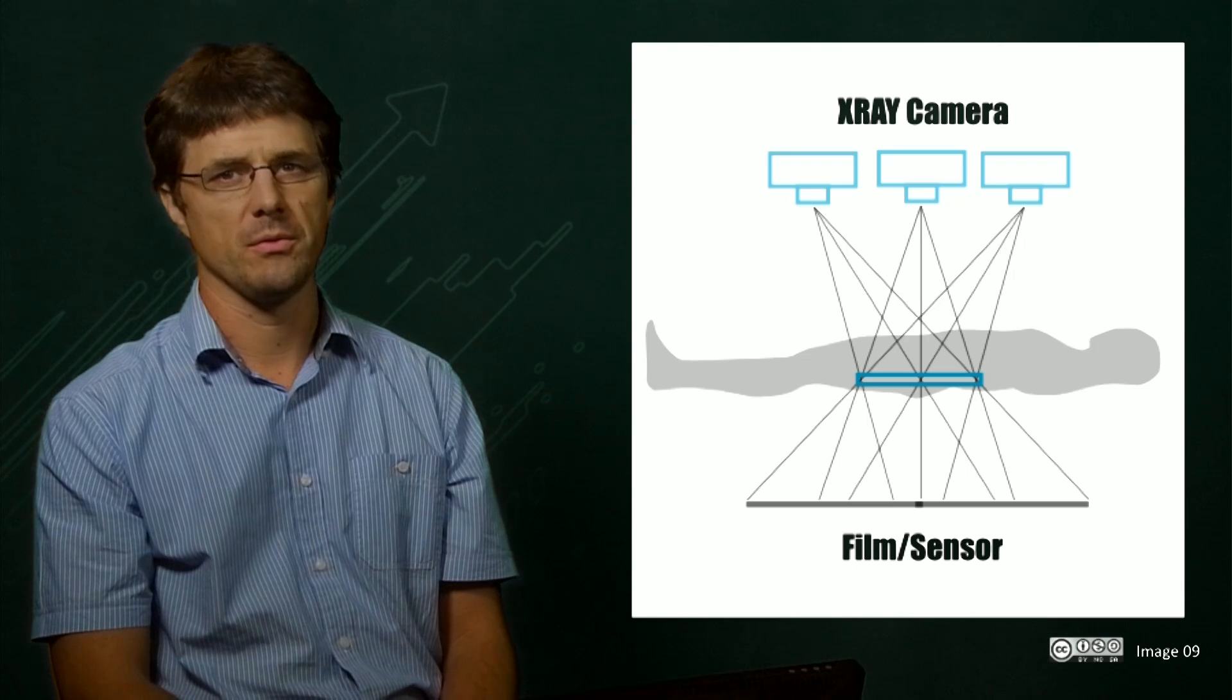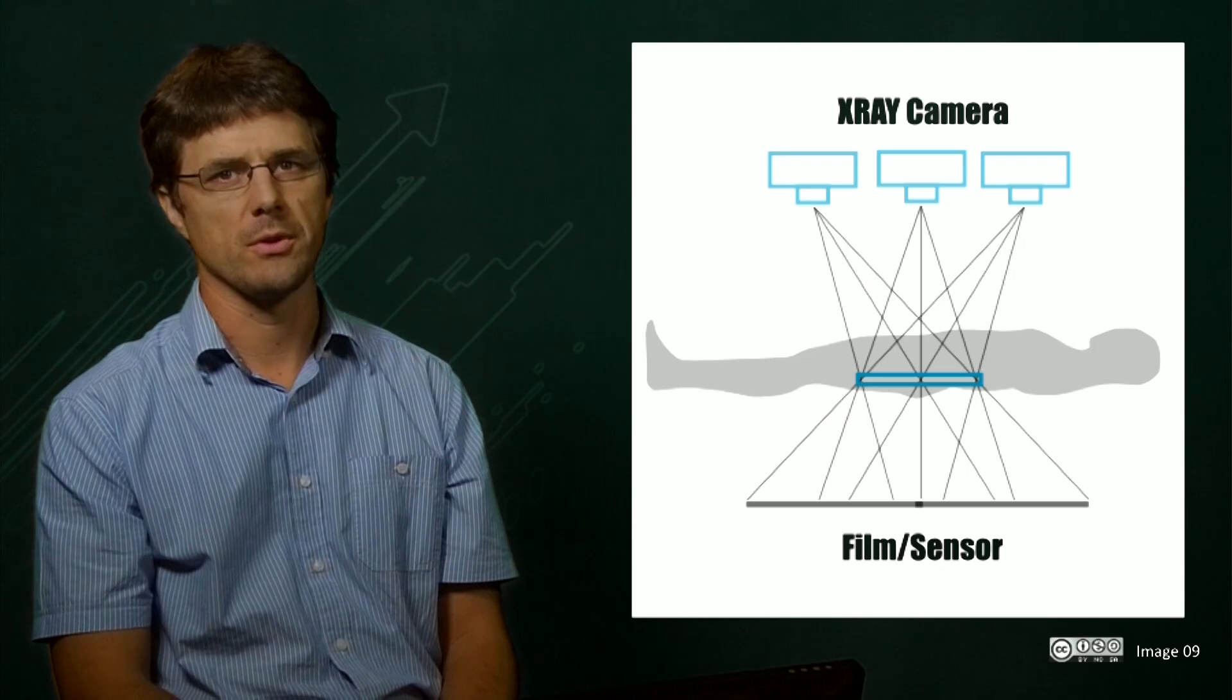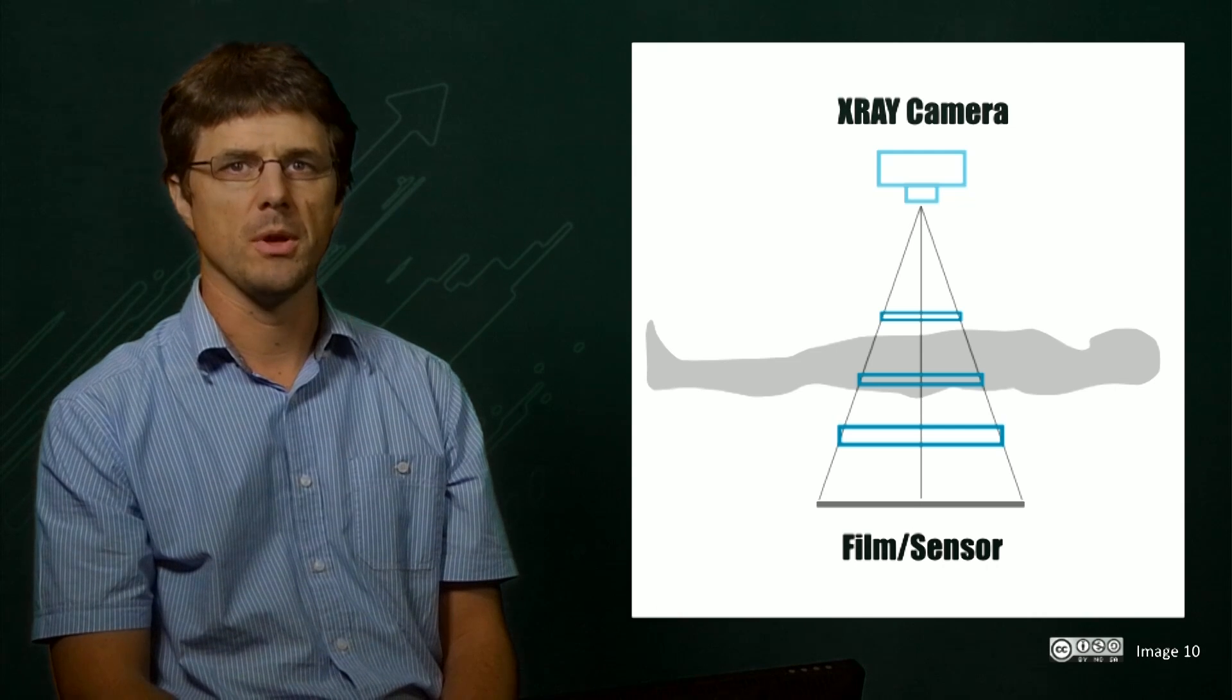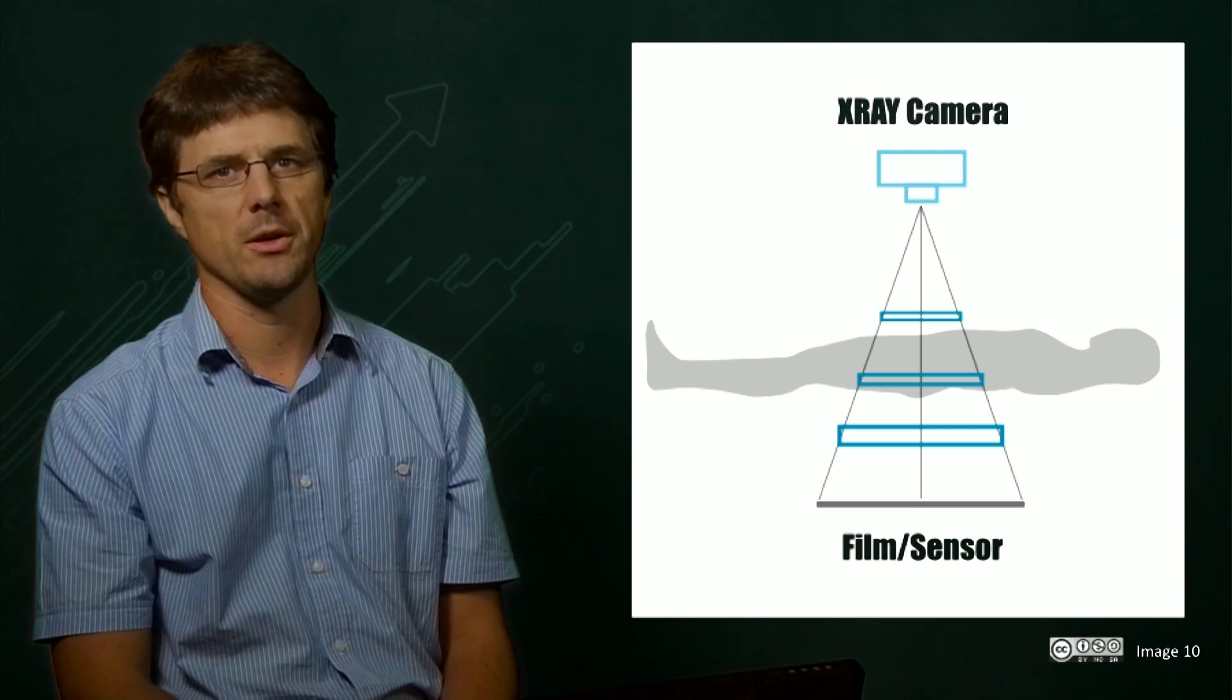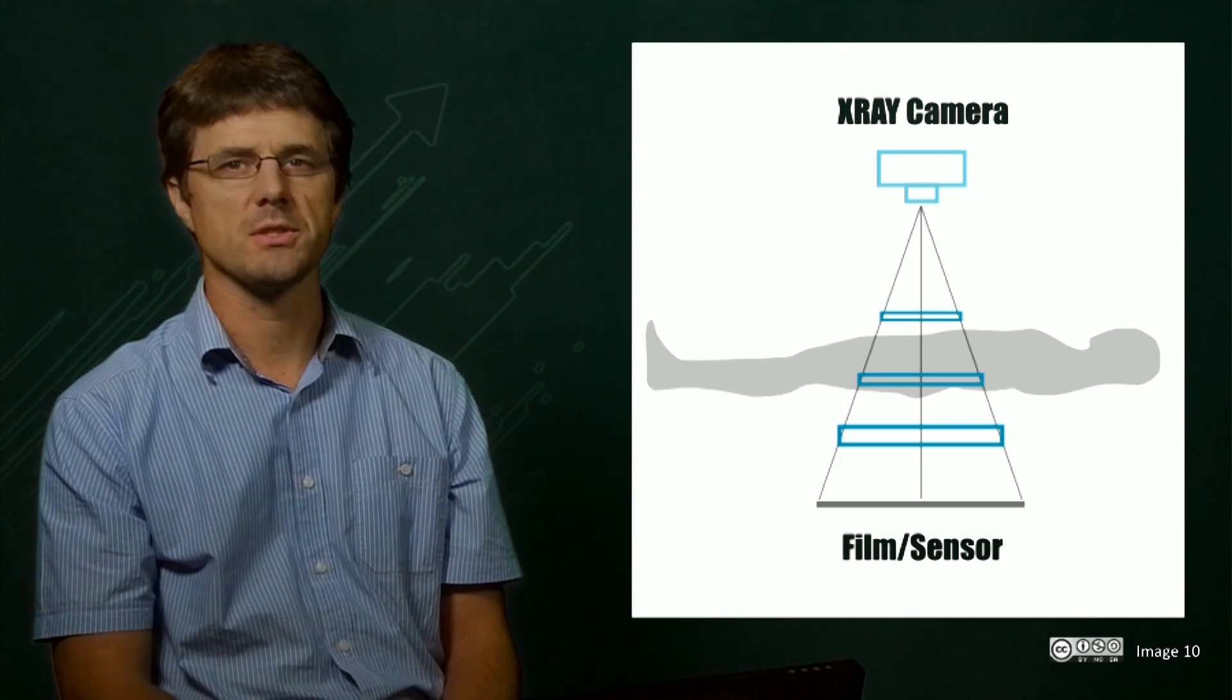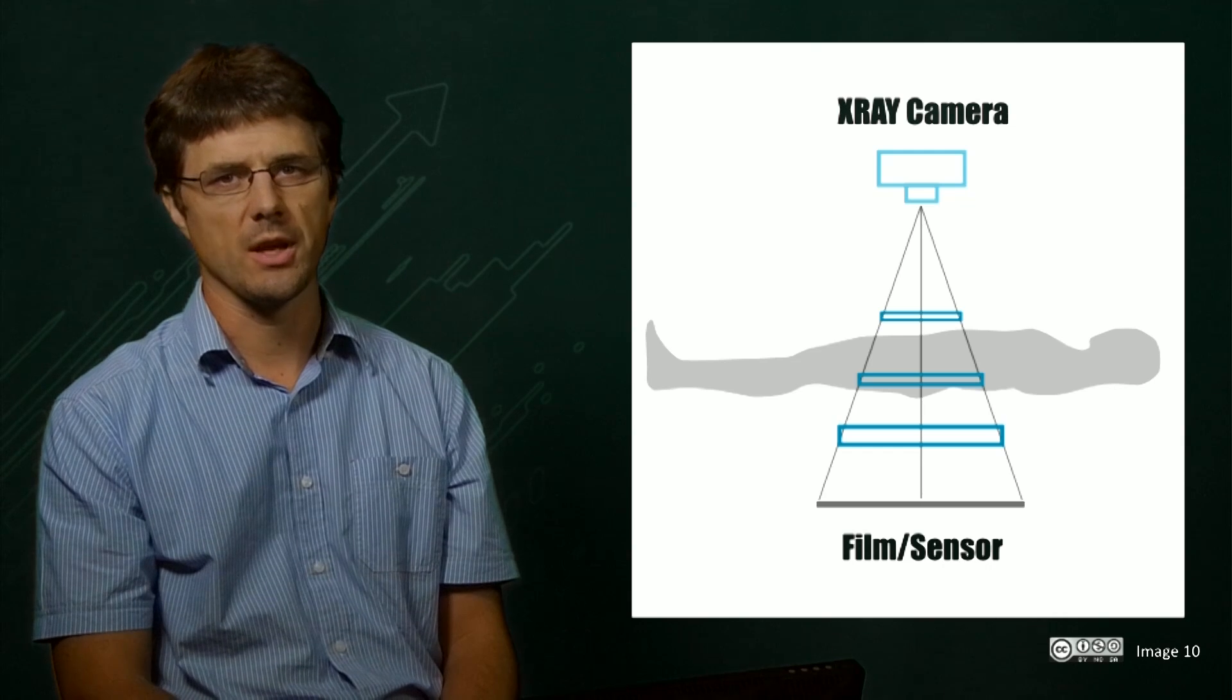If we instead increase the speed of the film, the plane will shift away from the film. When using this technique, it is also important to remember that as we shift the imaging plane away from the camera, the plane will increase in thickness, and conversely decrease in thickness as we shift closer to the camera.